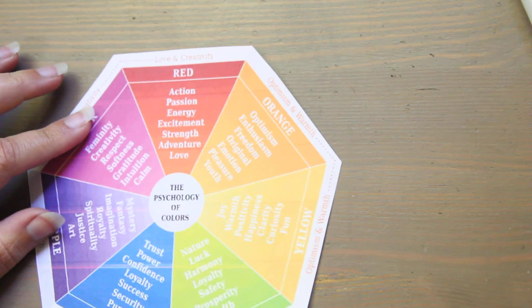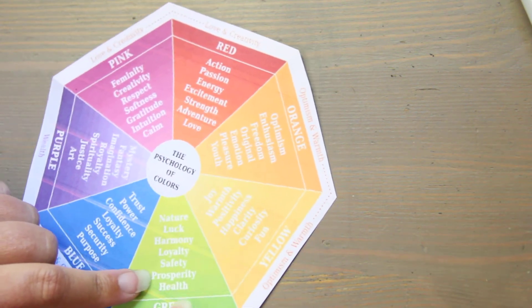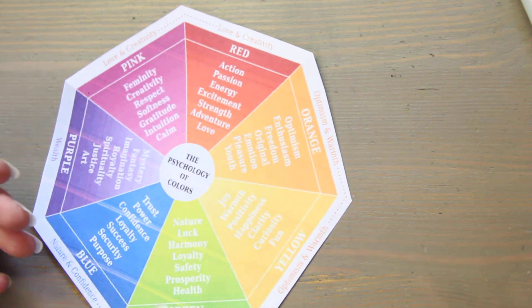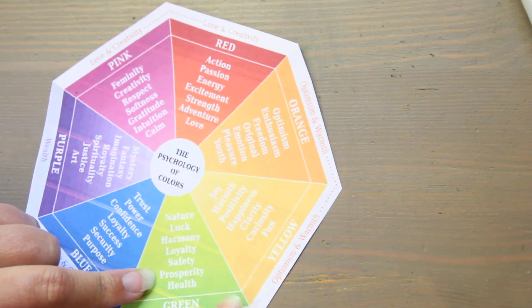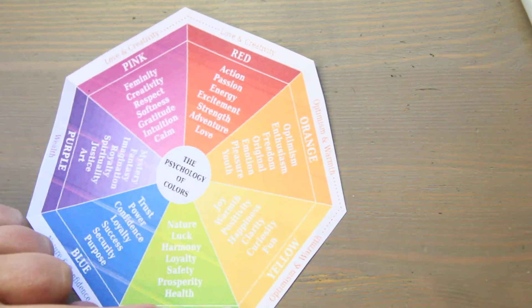You look at green nature luck harmony loyalty safety if you are a brand company and you're trying to do a line of food you're gonna add a lot of green you want it to look as natural as possible you want it to look safe you want it to be prosperous health all the things that people naturally associate with color.